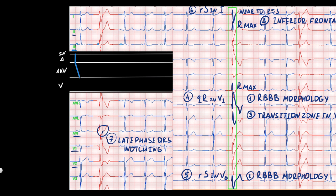Because conduction in the AV node is slow, the impulse needs more time to pass through, represented as the PQ segment on ECG. When the impulse enters the ventricles, conduction speed becomes higher again, shown as the QRS complex. In this complex, the sinus P-wave indicates the atria are depolarized by the sinus node normally.